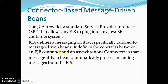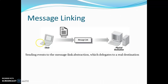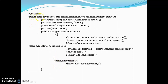JCA provides a standard Service Provider Interface which allows enterprise information systems to plug into any Java EE container system. Whenever a client makes use of a message, a message link is sent to the physical destination - this is a message link abstraction which delegates to a real destination. In the implementation, we make use of a stateless session bean with a text message, using a resource connection factory with the map name set to 'myQueue' as the source whenever we are trying to send messages point-to-point.